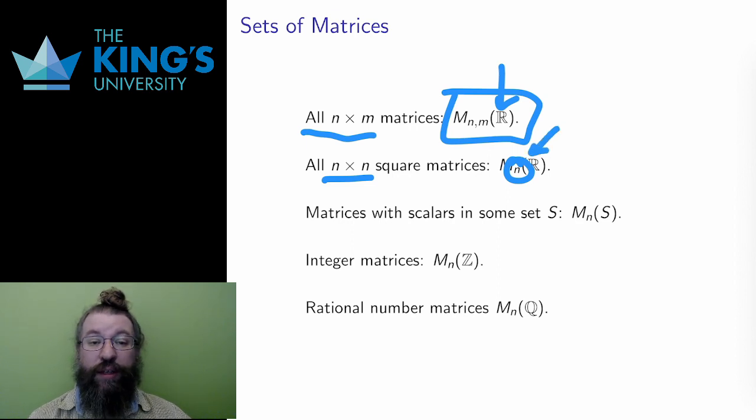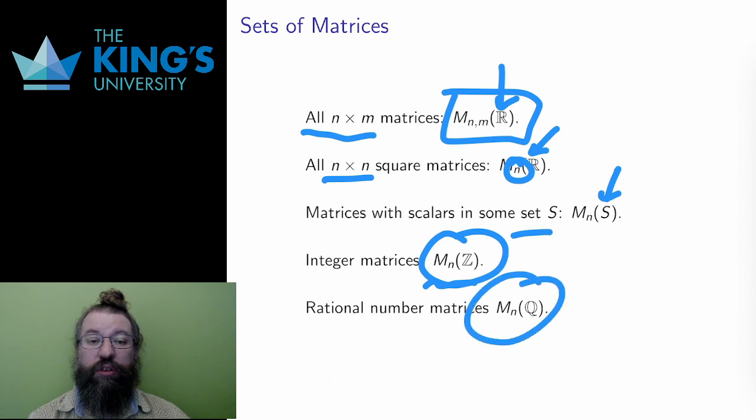If I want a different number set in the matrix, then I replace R with some other number set S. For example, this symbol represents the set of all square n by n matrices with integer entries, and this one the same with rational entries.